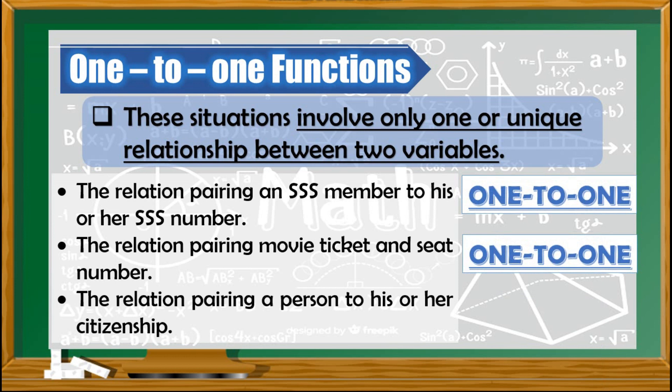Second, the relation pairing a movie ticket and seat number. Each movie ticket is assigned to a seat number, so this is an example of one-to-one. Third, the relation pairing a person to his or her citizenship. A person can possibly have dual citizenship, therefore this is not one-to-one.